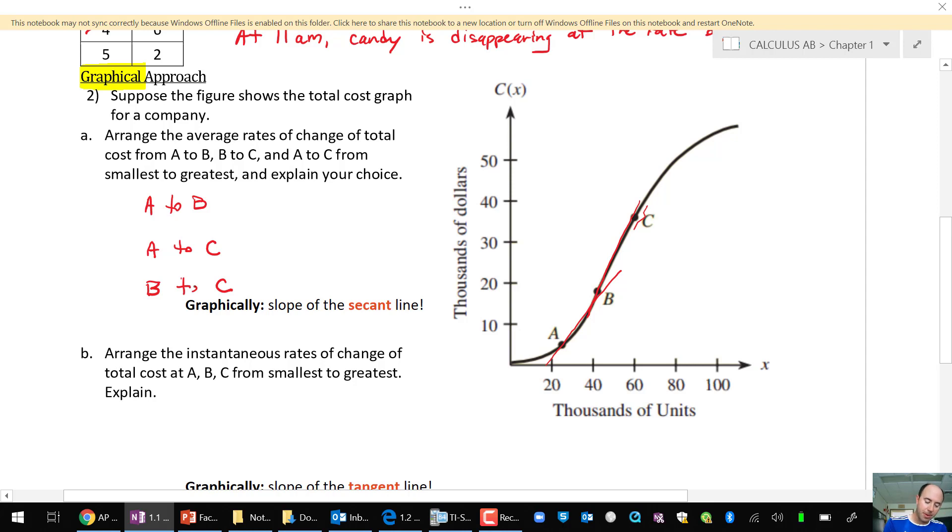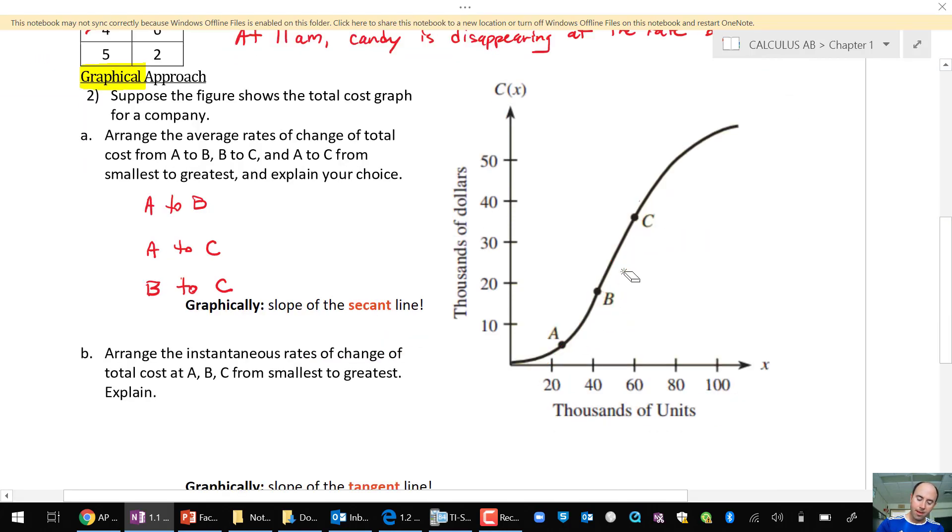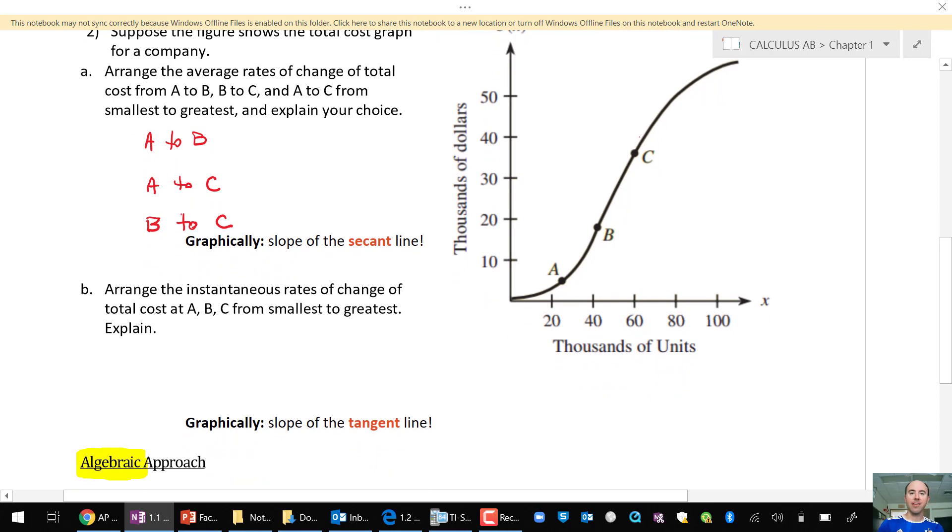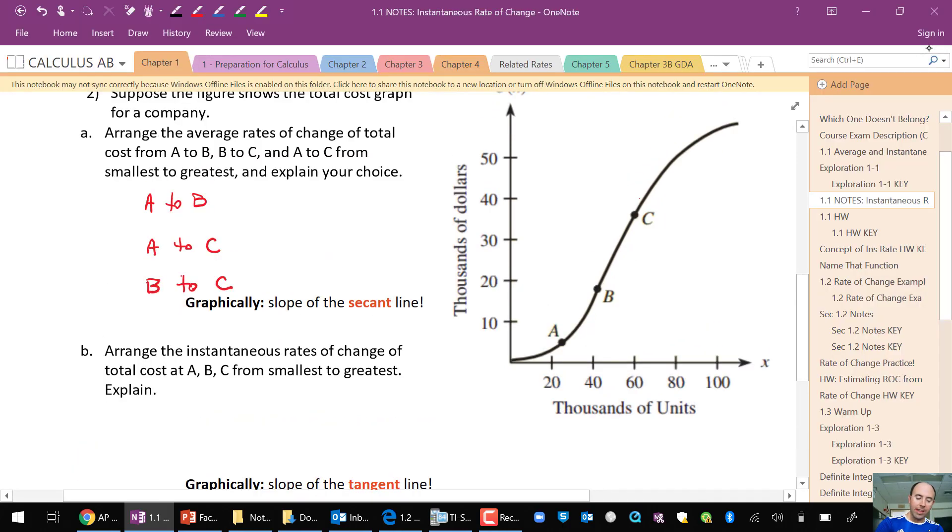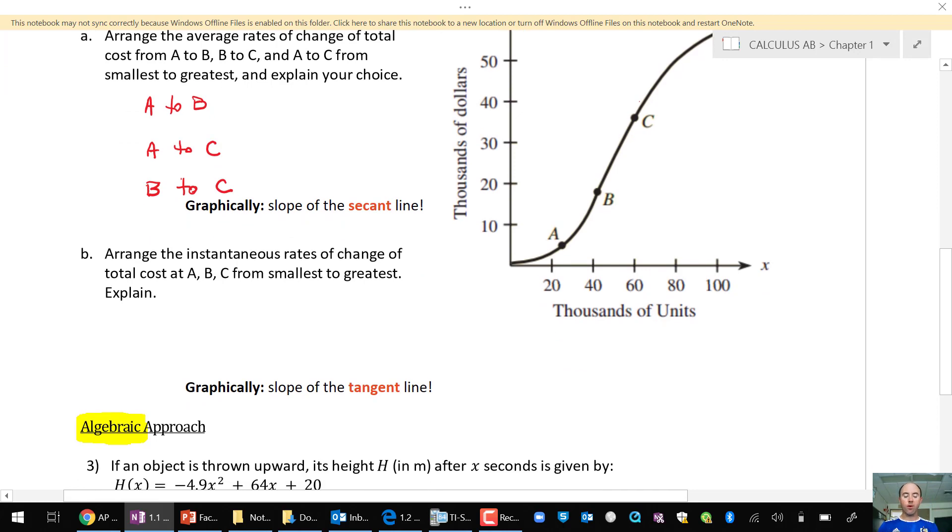Part B says to arrange the instantaneous rates of change. When we see that word instantaneous rate of change, what that means is the derivative or the slope of the tangent line in this case. So at point A exactly, my tangent line might look like this.